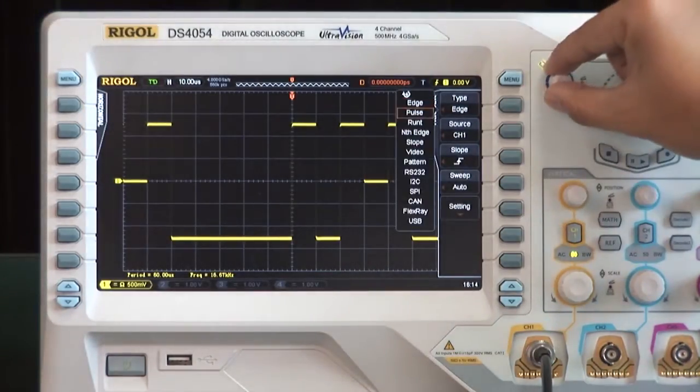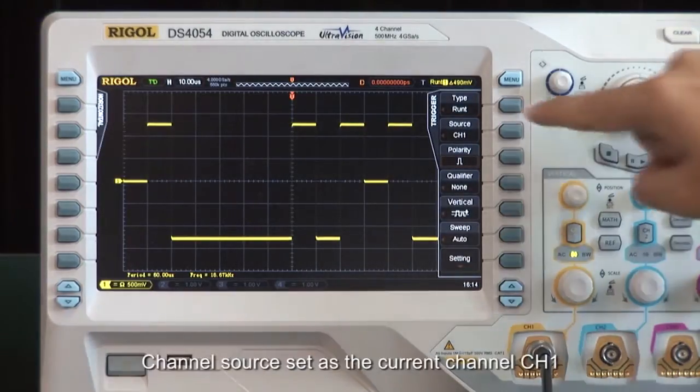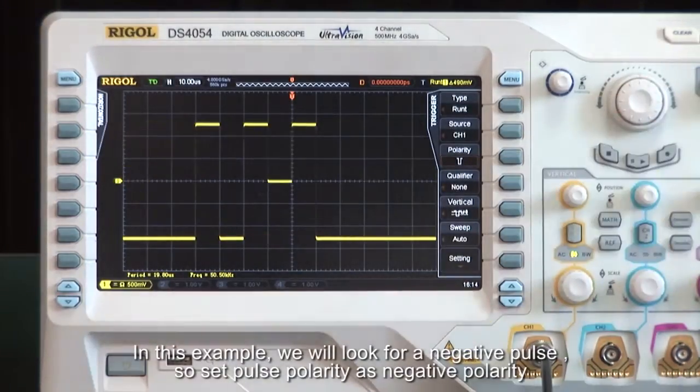Let's enable the Runt trigger. Set trigger mode as Runt. Select the channel source as channel 1. In this example, we will look for a negative pulse, so let's set the pulse polarity to negative.